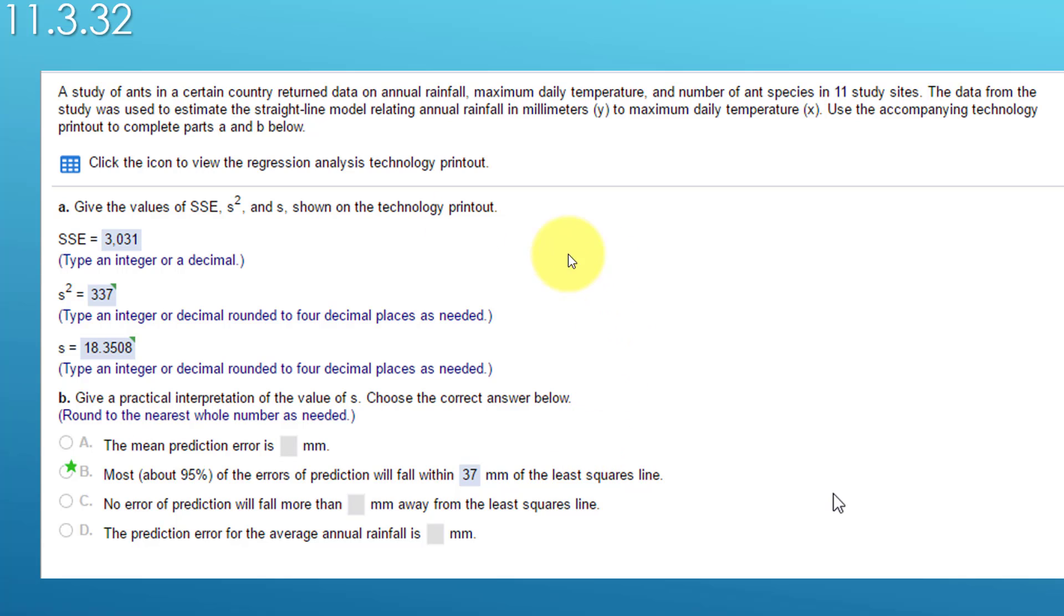When they ask you these questions, they will give you one of two options: they will give you an icon you click on that will open up a table with the X data and Y data you need to run your own regression, or they will give you an actual printout or screenshot of an output from some statistical software with that information. Either way, you'll be able to get the SSE, s-squared, and s directly.